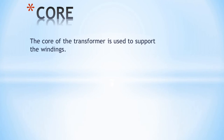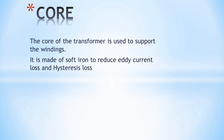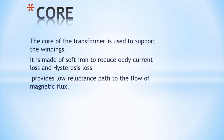The first part is the core. The core of the transformer is used to support the winding. The core is also used to reduce eddy current loss, and to provide a low reluctance path for the magnetic flux to flow.